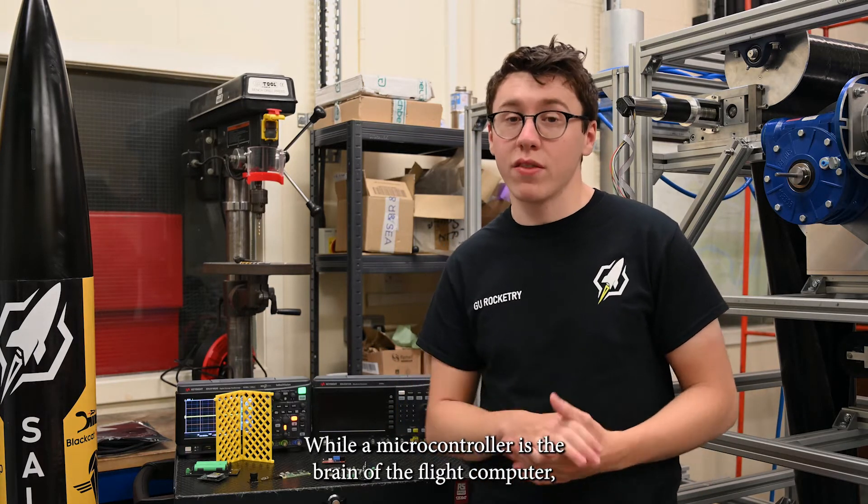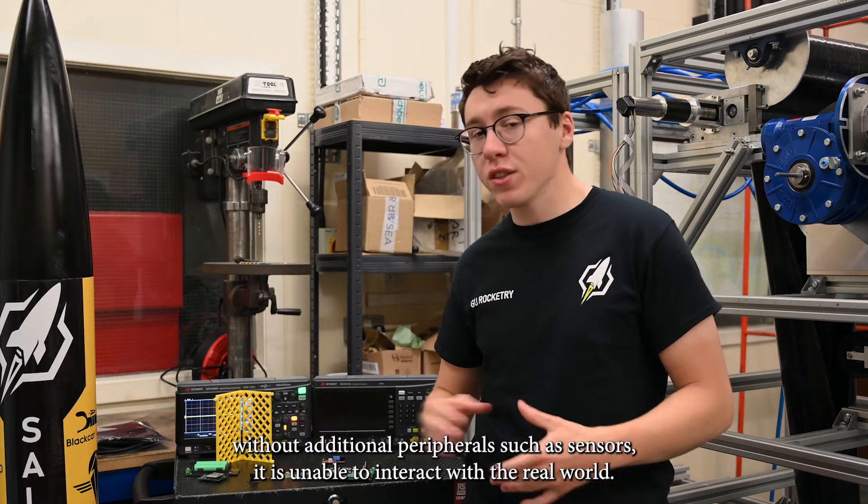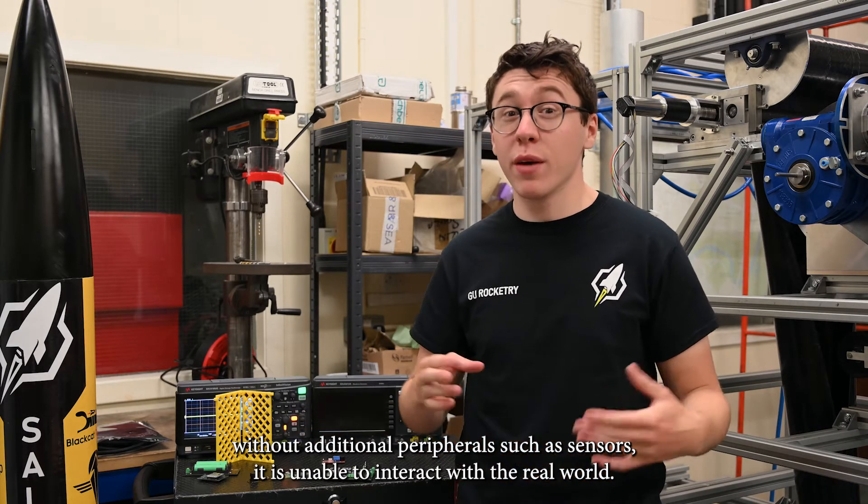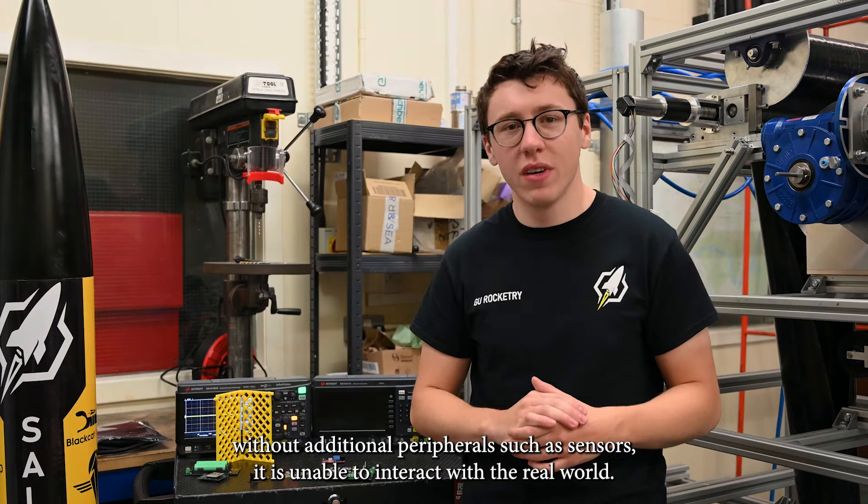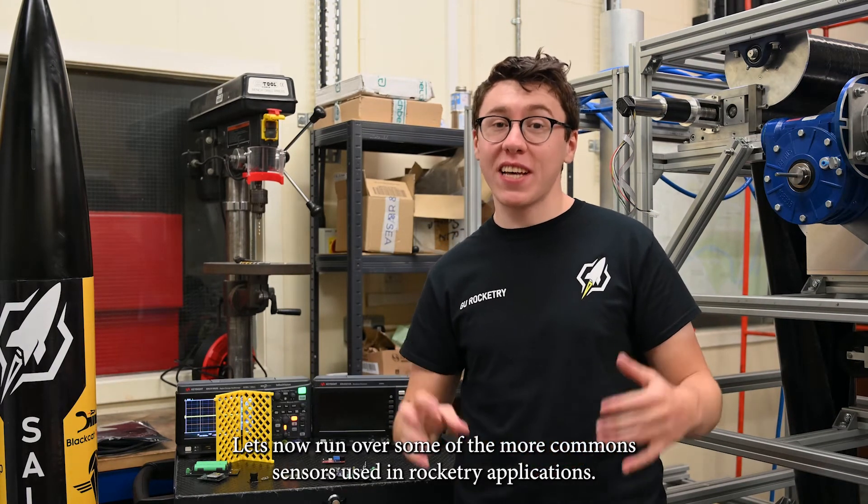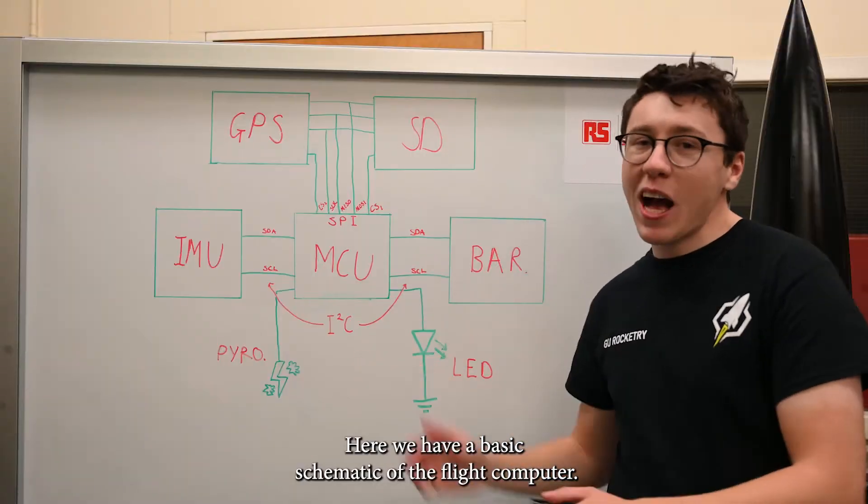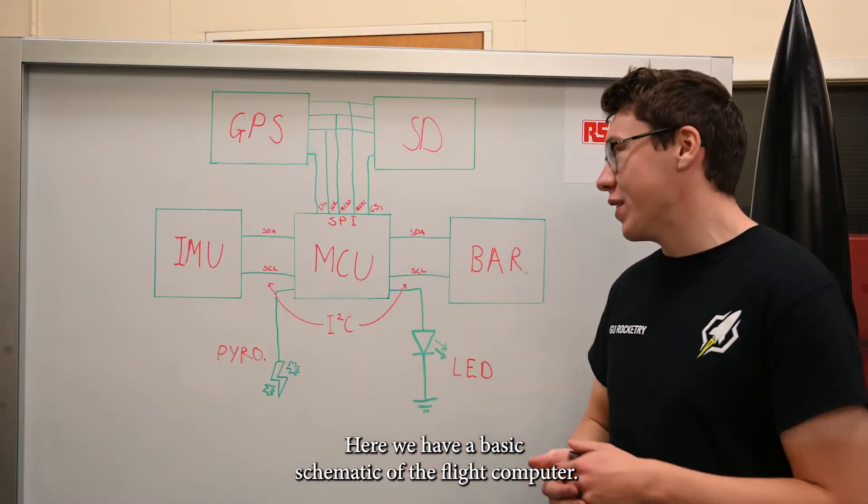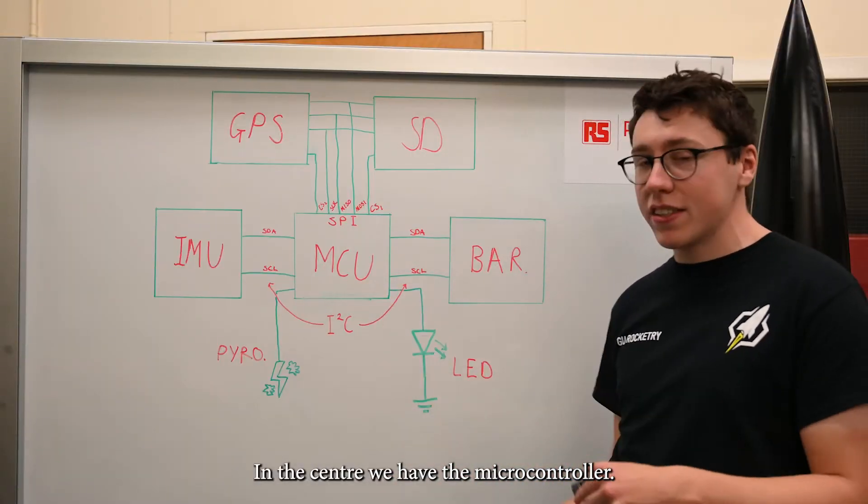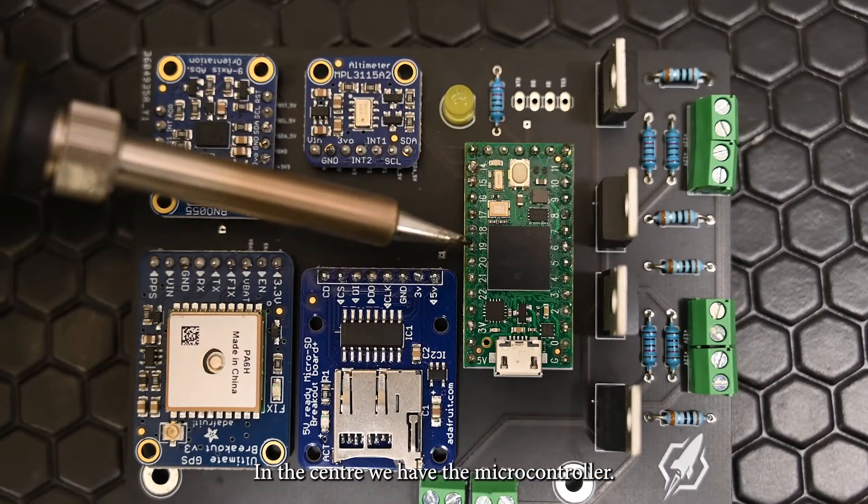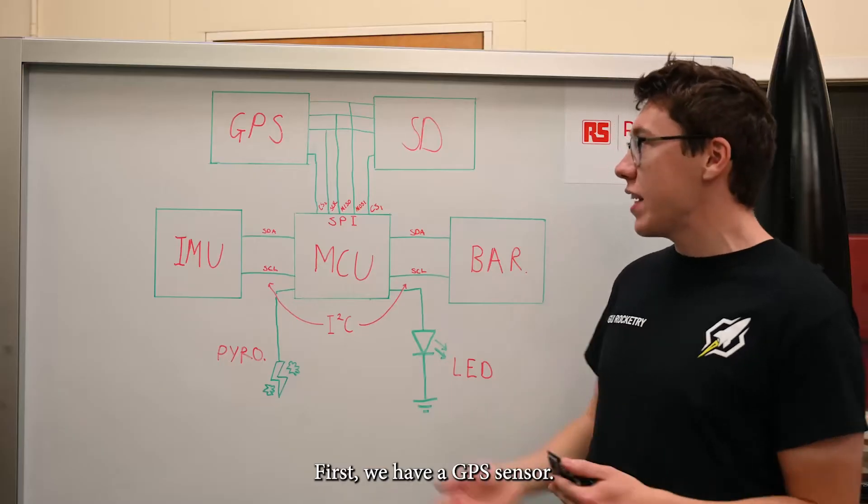While a microcontroller is the brain of the flight computer, without additional peripherals such as sensors, it's unable to interact with the real world. Let's now run over some of the most common sensors used in rocketry applications. Here we have a basic schematic of the flight computer. As a quick reminder, here is the sensor, as we just mentioned, we have the microcontroller. Now the first sensor, GPS.